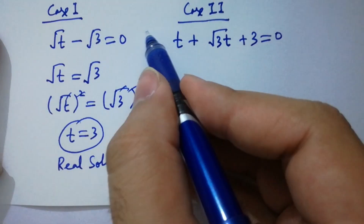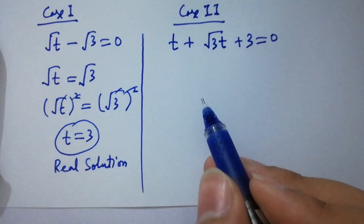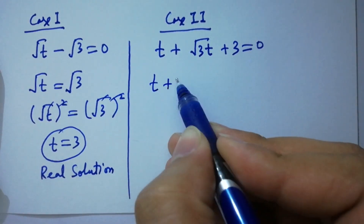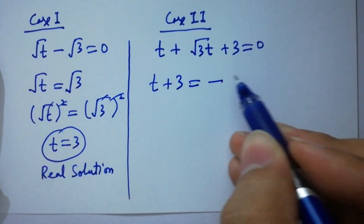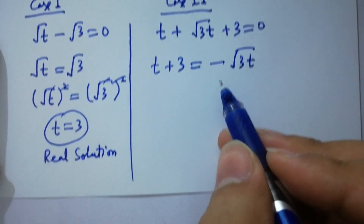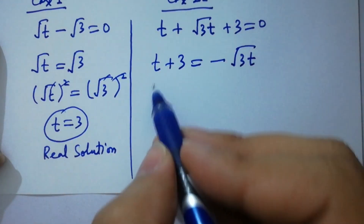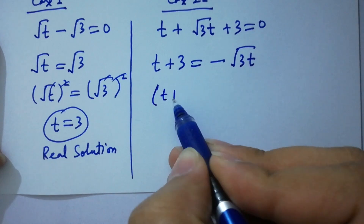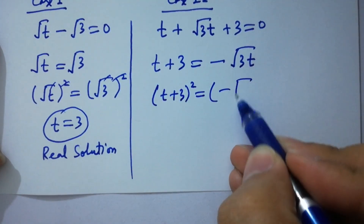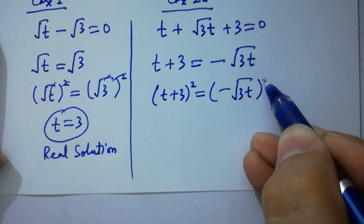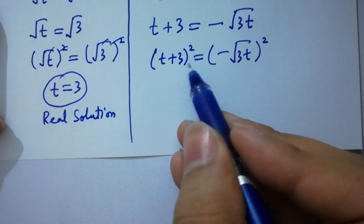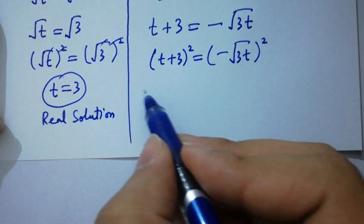From case two: t plus square root of 3t plus 3 equals 0. Rearranging, t plus 3 equals minus square root of 3t. Squaring both sides and applying the formula a plus b whole square equals a squared plus b squared plus 2ab.